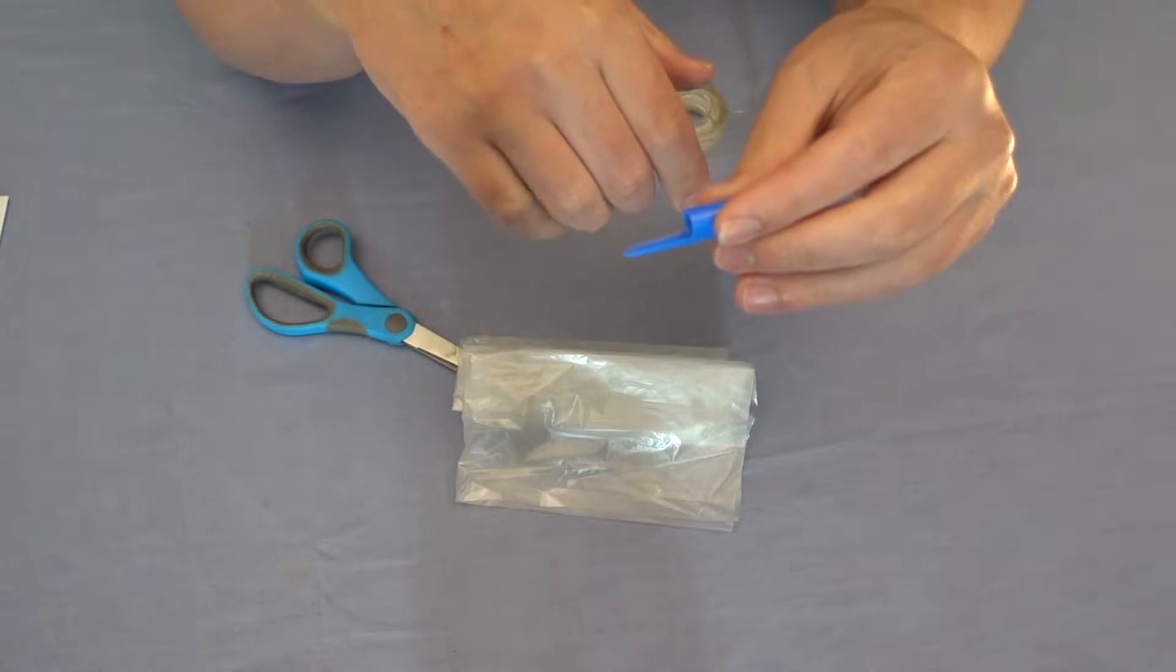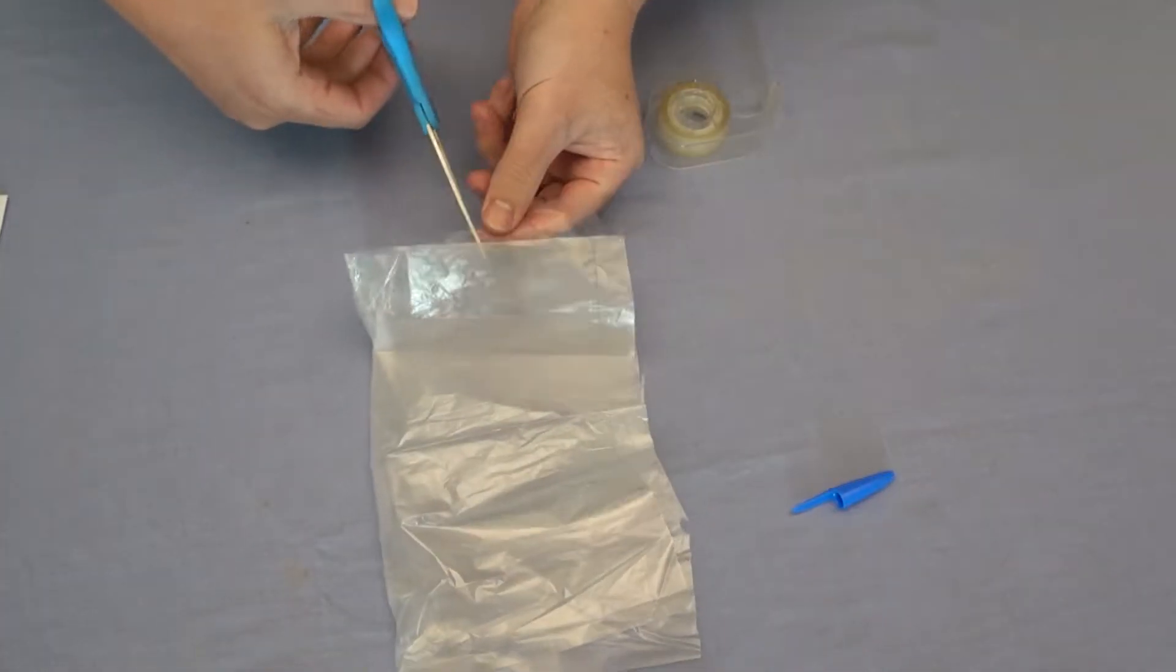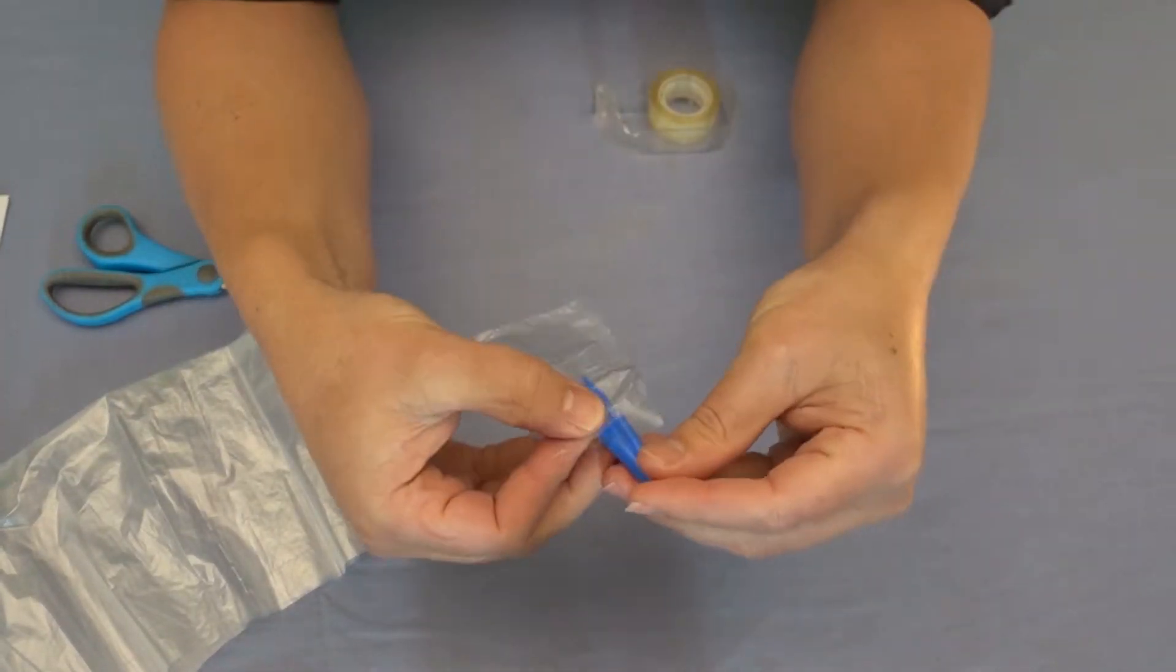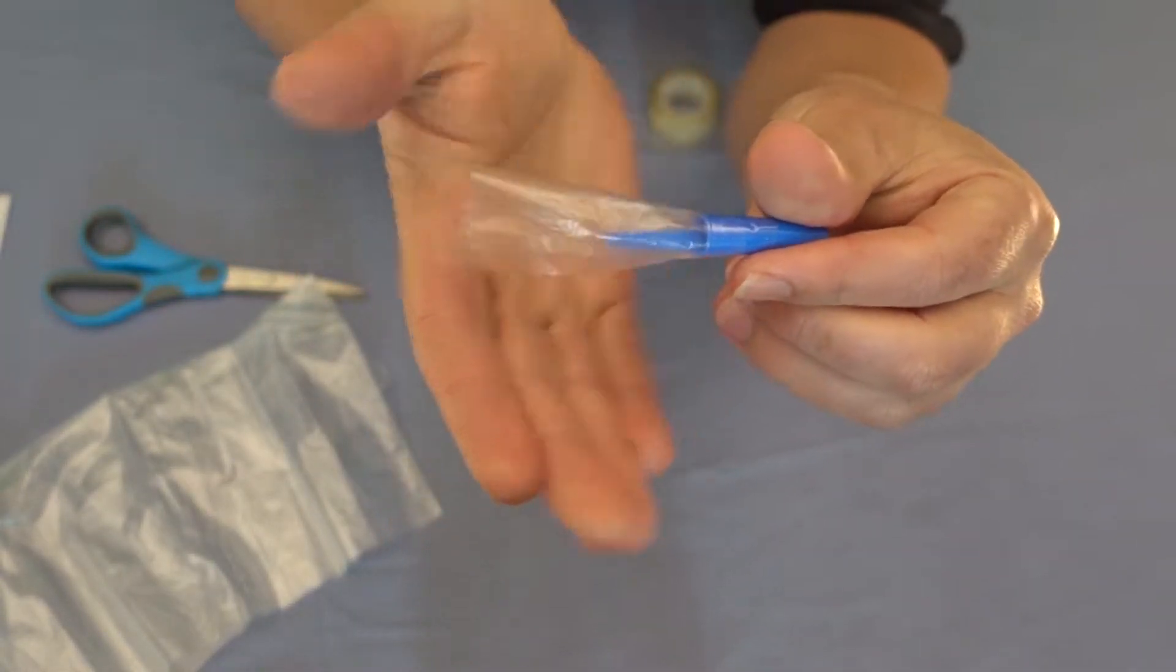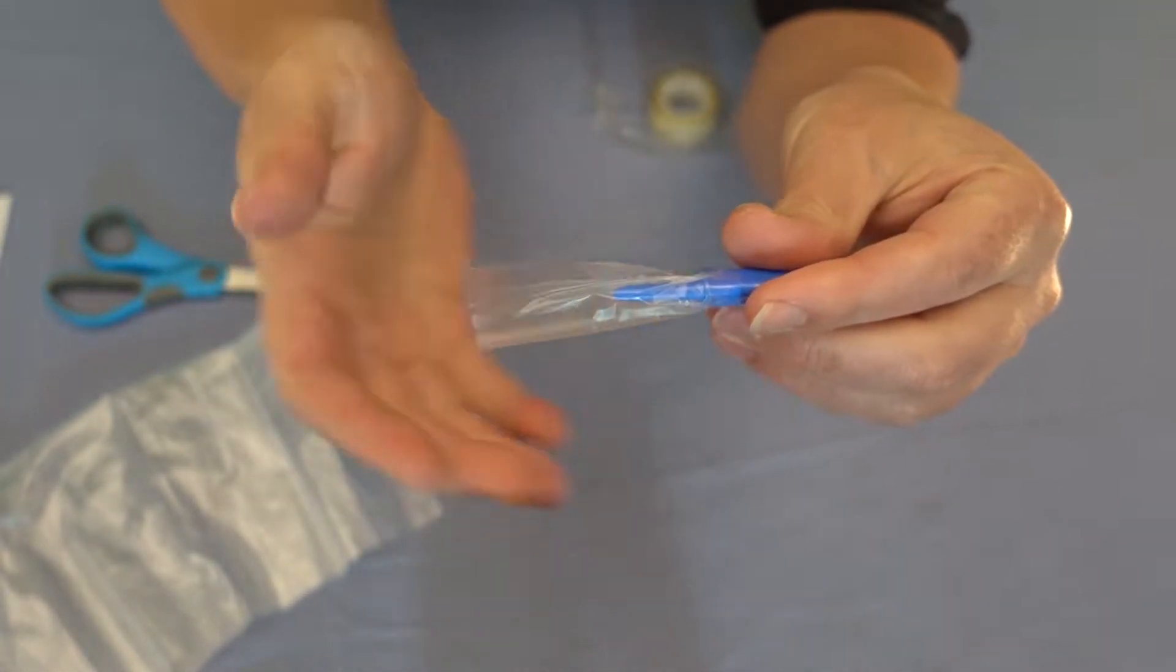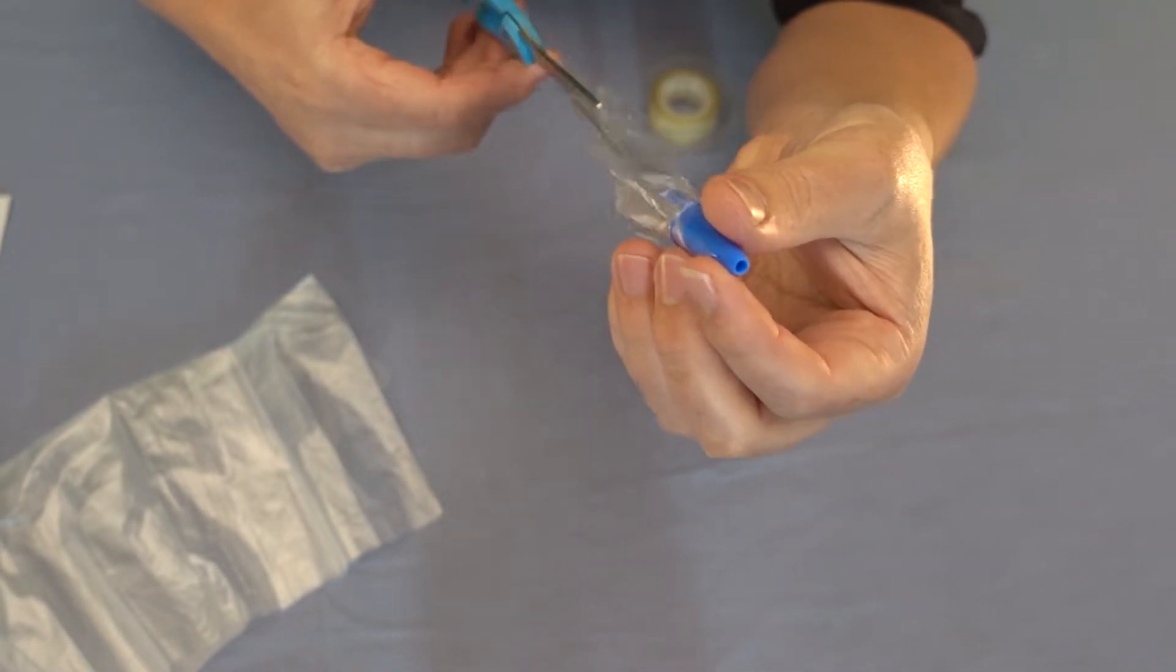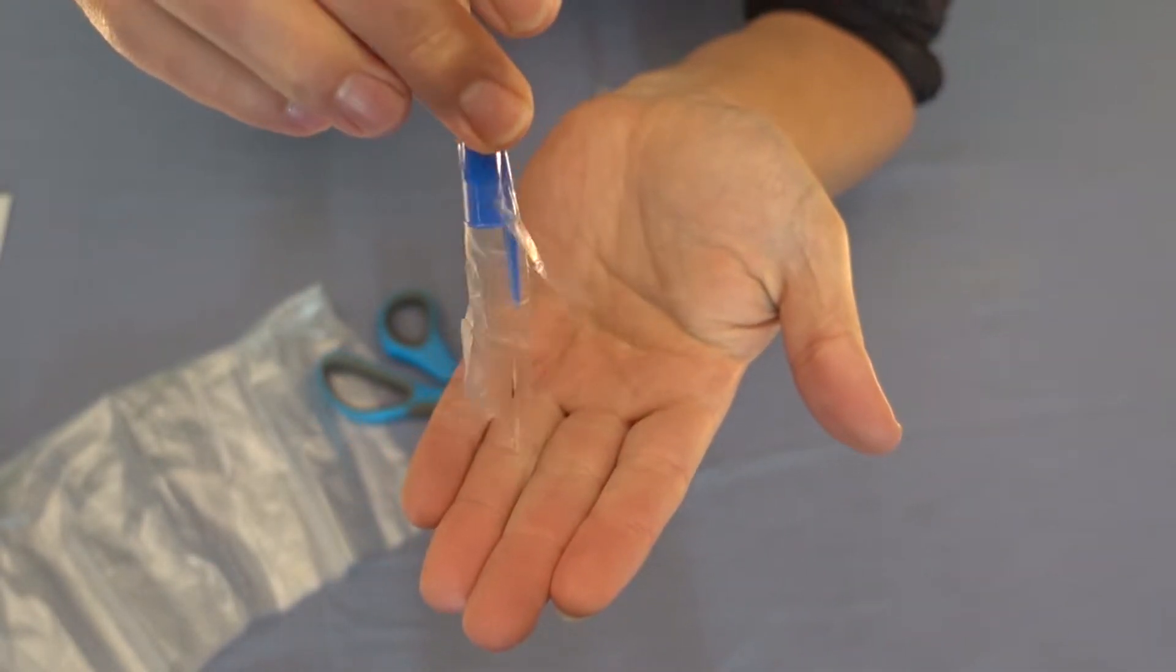Now that my plastic's attached, I'm just going to cut it into little strips to form the tentacles. Now I've got my little jellyfish.